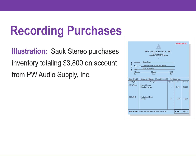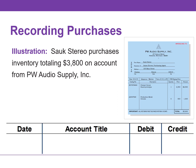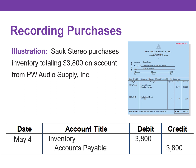For example, Salk Stereo purchases inventory for $3,800 on account from PW Audio Supply. A purchase invoice must accompany a credit sale. Salk Stereo makes the following journal entry to record its purchase. The entry debits inventory and credits accounts payable for $3,800.